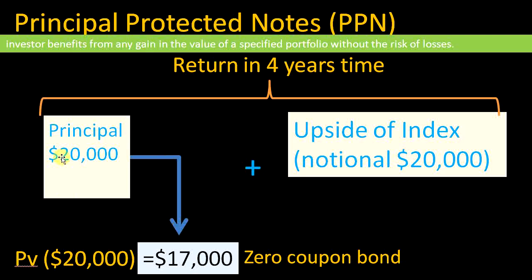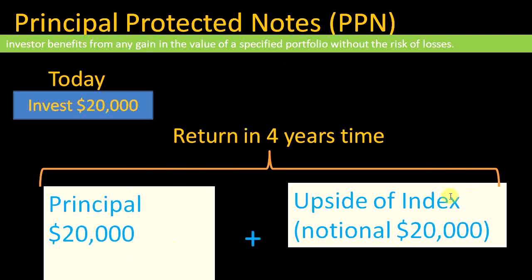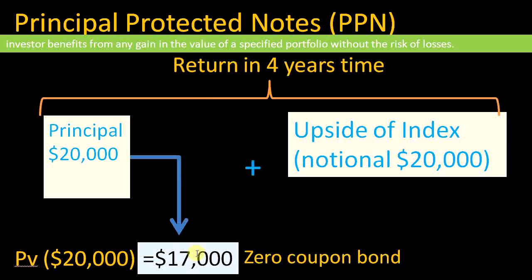Now we have $3,000 left. To make this principal protected note profitable, we need to structure the whole product for less than $20,000 so that when the client pays us $20,000 we make some profit. Since we've spent $17,000 on the zero coupon bond, we have $3,000 remaining to set up the structure that captures upside in the index without taking any losses. If we can structure this part for less than $3,000, we can make a profit.